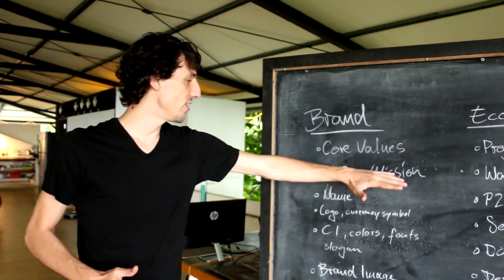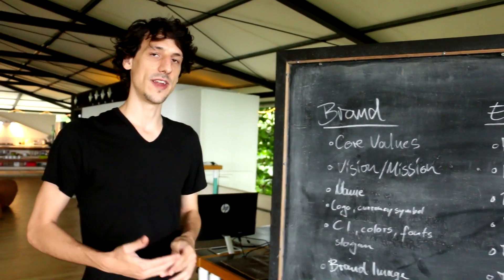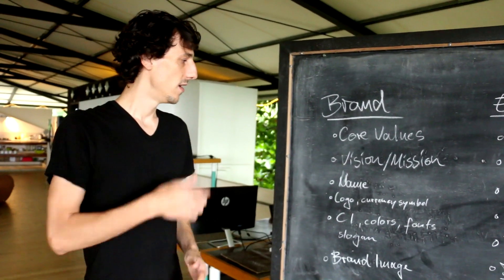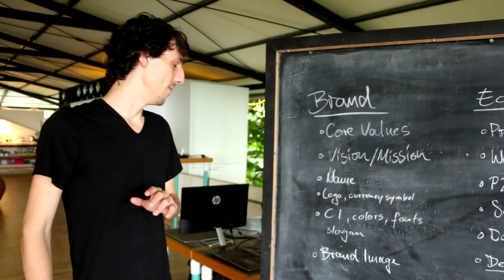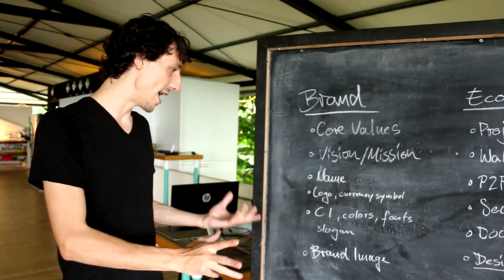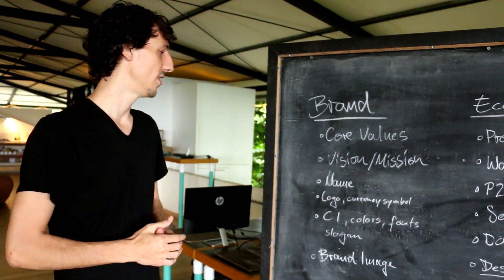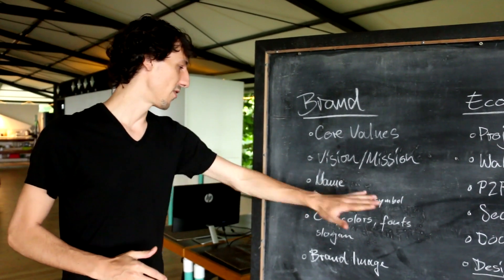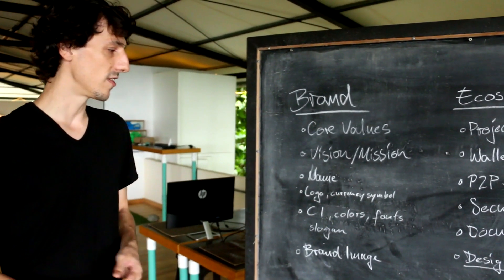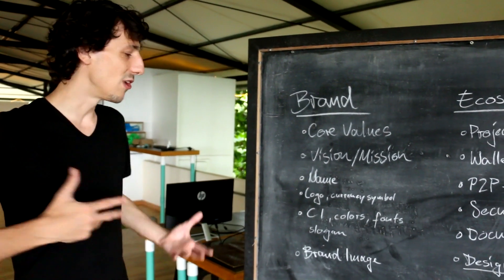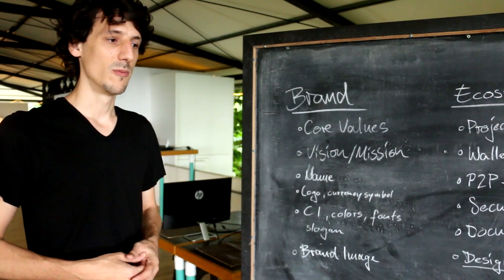To clearly state the vision and the mission — how we want to set new standards for the blockchain field and community — and how to brand our protocols and our apps. The logo, the currency symbol, the whole corporate identity: what colors, what fonts, what slogans we use, and what image we want to communicate.